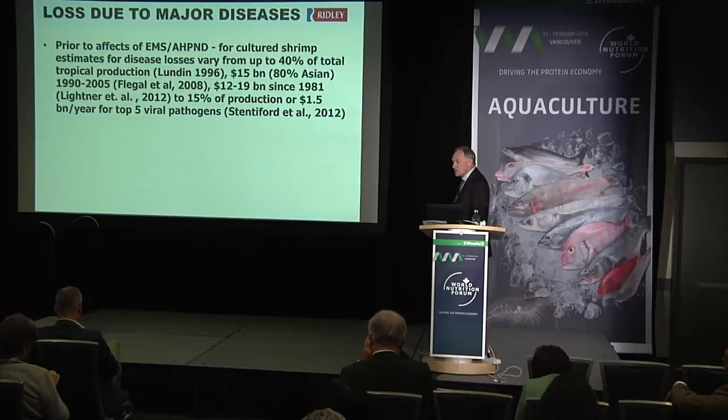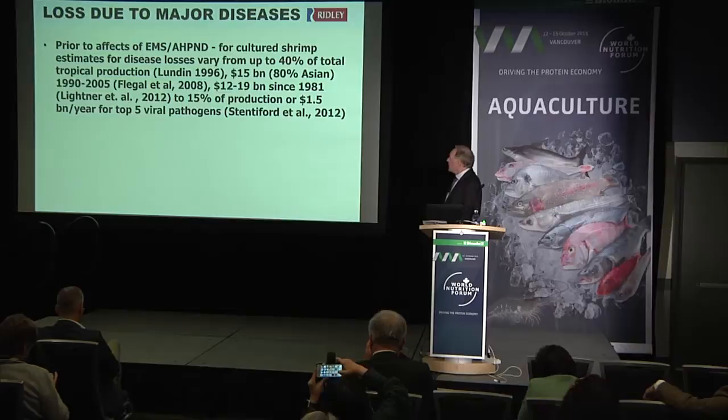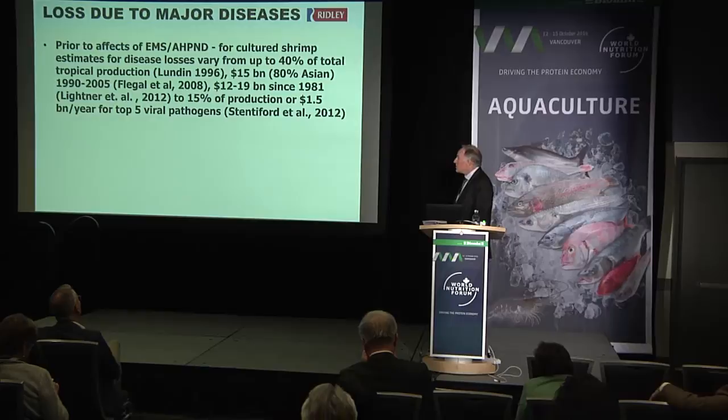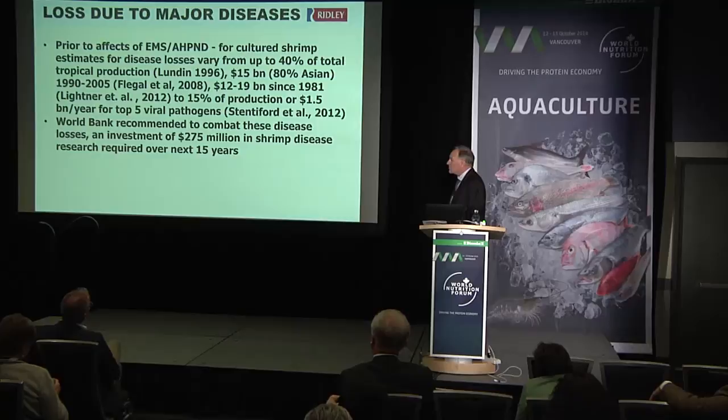Regarding economic loss due to disease — there's been a lot of work done prior to EMS arriving. Various estimates put losses at up to 40% of total production, $15 billion, 80% of which was from Asia, or $12 to $19 billion since 1981, or 15% of production, or $1.5 billion per year for the top five viral pathogens. This was all prior to EMS.